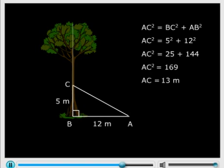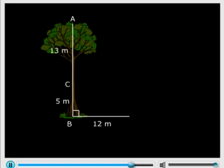Find the square root: AC equals 13 meters. So the original height of the tree is AC plus CB. Don't forget that you need to add CB, so 13 plus 5 or 18 meters.